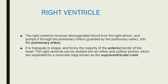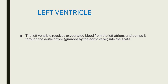The right ventricle is triangular in shape and forms a majority of the anterior border of the heart. It can be divided into an inflow and outflow portion, which are separated by a muscle ridge known as the supraventricular crest.